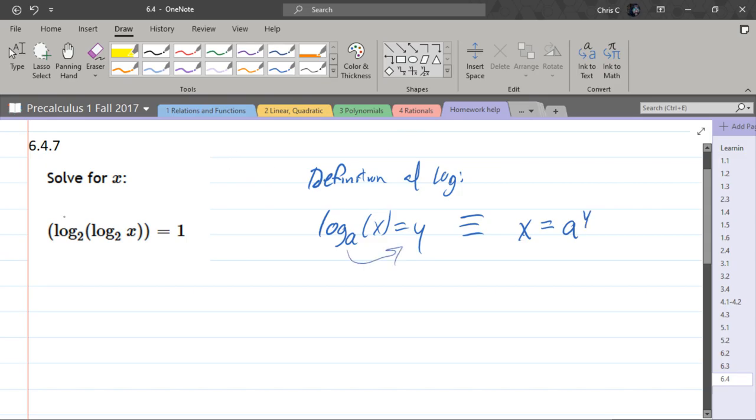For this particular problem, however, it's not just log of one thing. It's log of one complicated thing. So what we're going to do is use that same definition, and that base 2 is going to go to the other side.